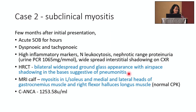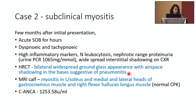A few months — about two or three months — after the first presentation to rheumatology, she came to emergency with acute shortness of breath for hours. She had very high inflammatory markers, neutrophil leukocytosis, nephrotic range proteinuria, and widespread renal shadowing on chest X-ray. HRCT also helped diagnose acute pneumonitis, and we had the MRI of the calf muscle by then, which showed high signal intensities in the calf muscles — evidence of myositis. Notably, she had normal CPK throughout. By then, it was clearly lung and renal syndrome.